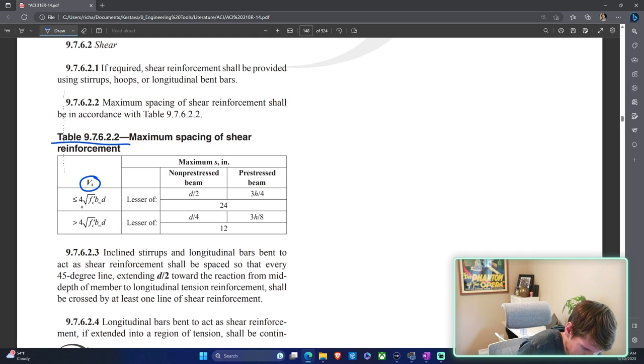So if it's less than four square root f'c BWD, then it's one thing. And if it's greater then it's another thing. And then it just comes down to non-pre-stressed or pre-stressed. We are non-pre-stressed. So we need to find this first step. So what is VS? Well, it's a quick little trick here that I'm going to show you right now. VS, what is it? We have the amount of steel, but how much shear capacity does that steel add to our concrete beam?